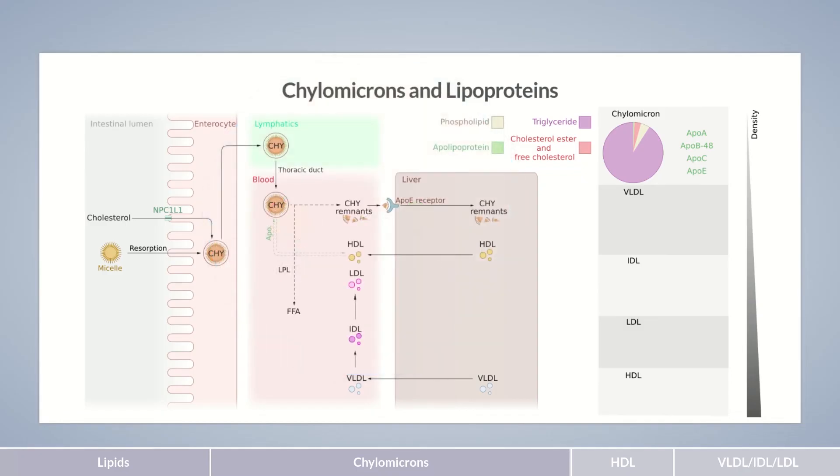The HDL particles mentioned originate from the liver. They're the smallest and most protein-rich lipoproteins in the body. Almost half of their mass consists of apolipoproteins. They pass on a portion of their ApoE and ApoC2 proteins to other lipoproteins. In HDL, the remaining ApoC2 proteins activate the enzyme LPL, leading to the cleavage of triglycerides and the release of free fatty acids, just as for chylomicrons.